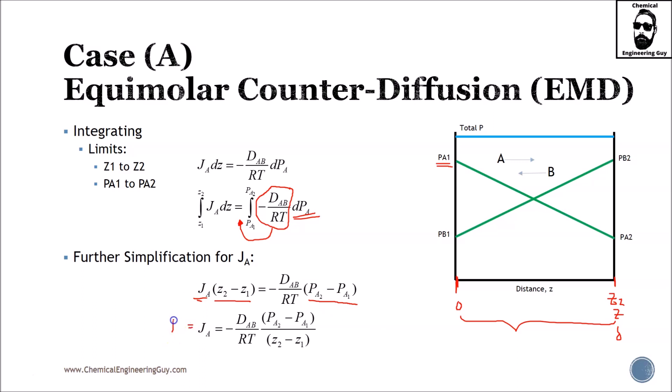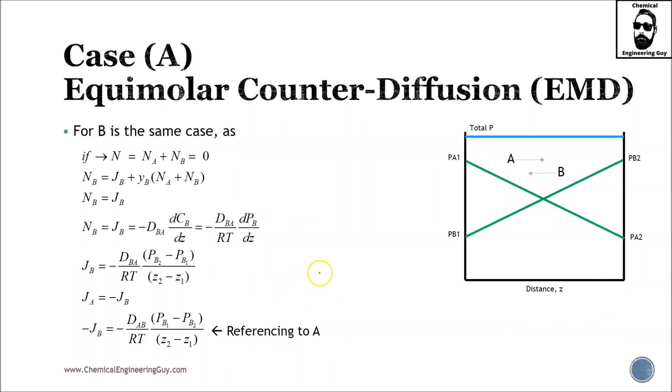Solving for JA, which at the same time, we already know that this is the total molar flux of A, we get this equation. And for B, you can do the same. I will invite you to do literally the same, but take care of that negative sign, which is essentially the same. We know that the total molar flux is 0 for the scenario.